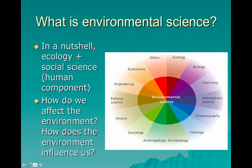In a nutshell, environmental science is two things coming together. It's largely ecology — the natural world — which includes both the living and non-living components and how they interact with each other. And then also social science, which is the human component, and how those two things fit together: how we affect the environment and how the environment affects us. Notice all of the different disciplines that go into environmental science — from ecology, chemistry, biology, and geology, to history, political science, and ethics.